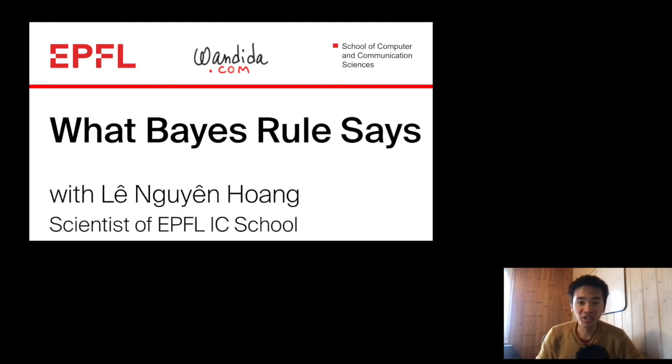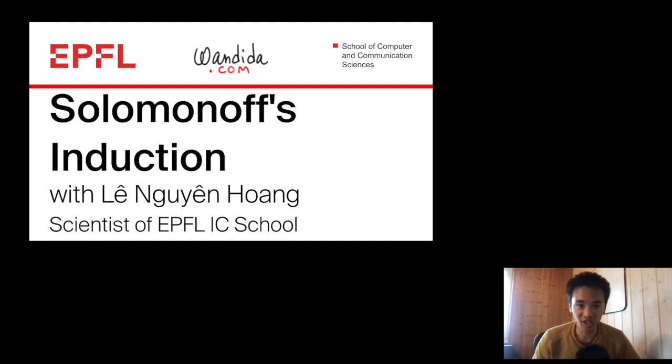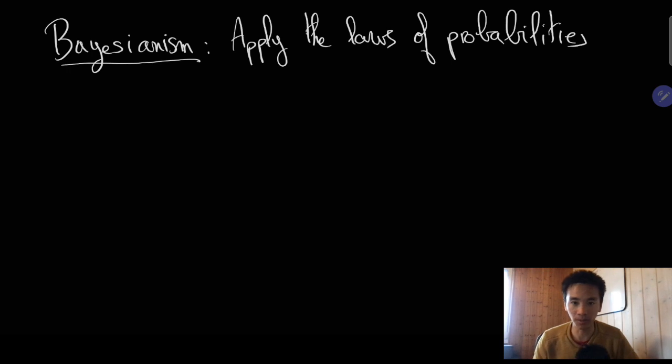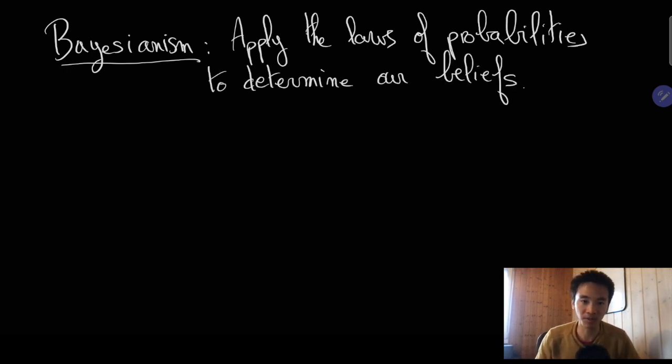In previous videos we described Bayesianism in general and Solomonoff's induction in particular. In short, Bayesianism consists of considering that the laws of probability theory are the right way to determine our beliefs, infer information from the data, and make predictions about future events.